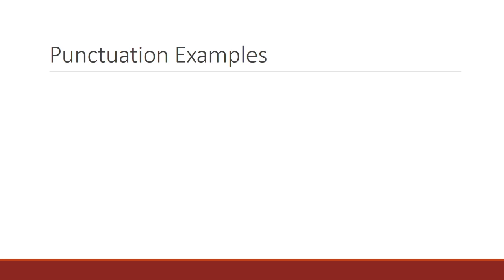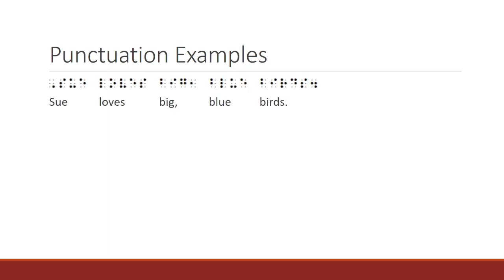Here are several examples of punctuation marks in use. The first sentence is: Sue loves big blue birds. Notice the comma after big and the period at the end of the sentence. Spacing works just like print. There is a space after the comma and the period. Also, notice the capital indicator at the beginning of the sentence before the S in Sue.